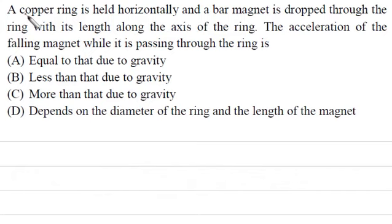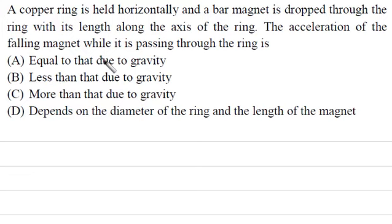Next question: A copper ring is held horizontally and a bar magnet is dropped through the ring with its length along the axis of the ring. The acceleration of the falling magnet while it is passing through the ring is — equal to g, less than g, more than g, or depends on diameter and length? Which option is correct? We need to apply some logic here.